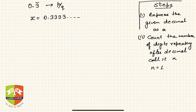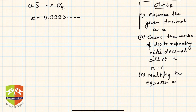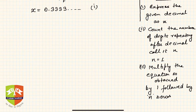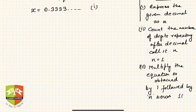Step 3: multiply the equation so obtained by 1 followed by n zeros. We have equation 1: x equals 0.333... Since n equals 1, we use one zero, making the multiplier 10. So we multiply both sides by 10.